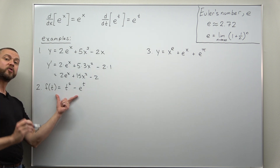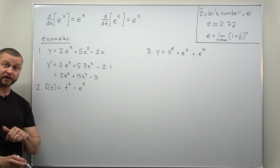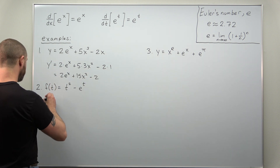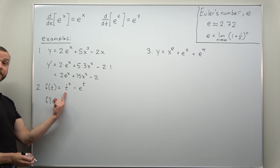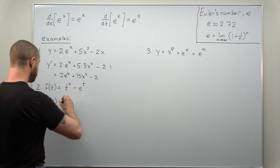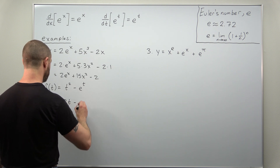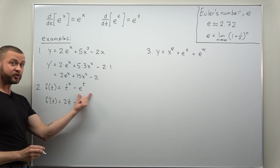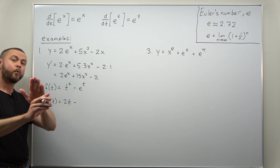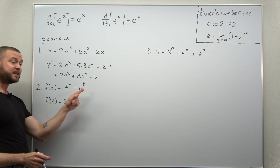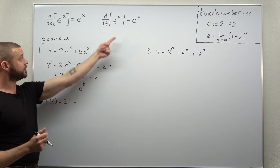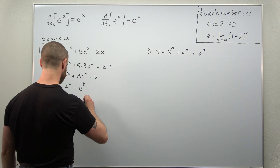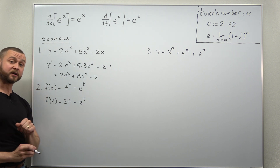Example 2 uses t as the variable, and differentiates the same way. For f(t) = t squared plus e to the t, we differentiate term by term. The derivative of t squared using the power rule is 2t. Then for e to the t — be careful, we are not applying the power rule because e to the t is not a power function. The derivative of the exponential function e to the t is itself, so f prime of t equals 2t plus e to the t.